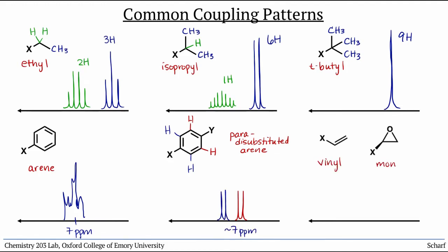Finally, vinyl groups and monosubstituted epoxides give similar sets of peaks, though in different regions of the spectrum since the carbons are differently hybridized. Because of the different sizes of the coupling constants between the 3 distinct hydrogens, we get unique peaks called doublets of doublets for each individual hydrogen. And the spacings between the lines are characteristic of the hydrogens in particular locations.